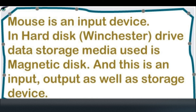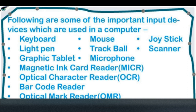Mouse is an input device. In hard disk Winchester drive, the data storage media used is magnetic disk, and this is an input, output as well as storage device. Following are some of the important input devices which are used in a computer.